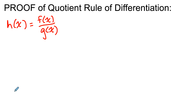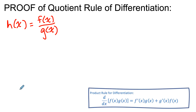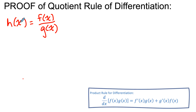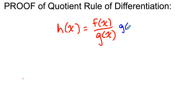I'm assuming up to this point you already know the product rule of differentiation, so that's going to be a crucial part of proving this derivative rule. Let me start by rewriting this function as a product of two functions. Let me multiply both sides by g(x) — the right side by g(x) and the left side by g(x) as well.